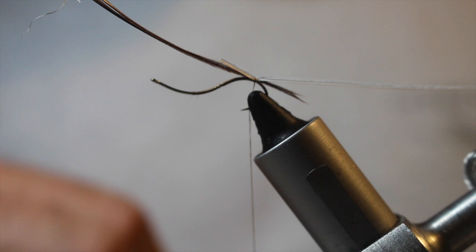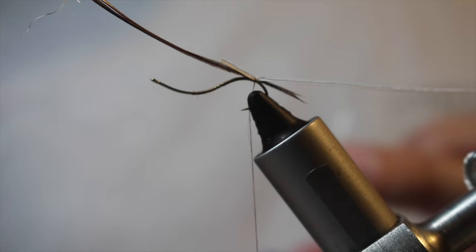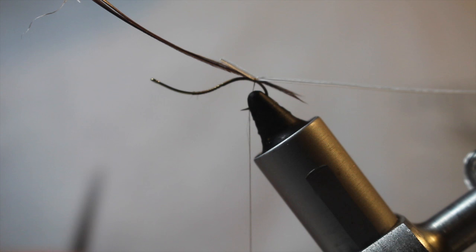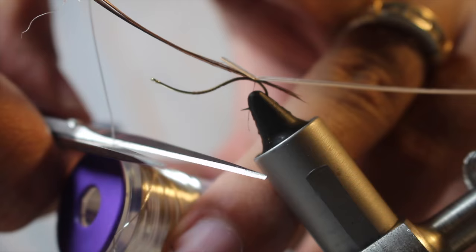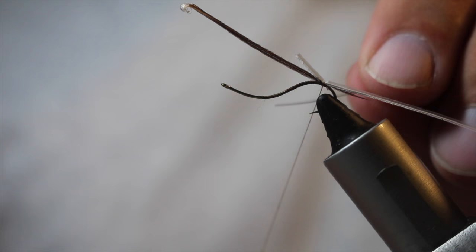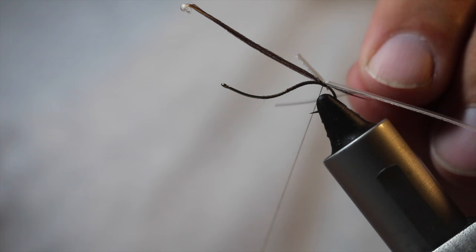And then we're going to put our ribbing to try to keep this fly together a little bit and protect it from the teeth of the fish. I am using UTC ultrawire in silver. You can use it in gold if you want, which I think would contrast the fly nicely, but because I don't have gold, I'm using silver. Always use the back of your scissors to cut wire. Also to cut your thread. Again, offer to the side. One more turn to hold. And now I'm just going to go through and tidy up.